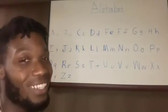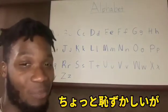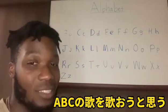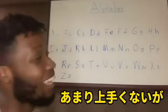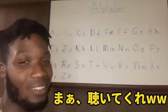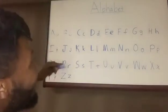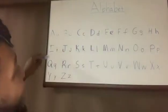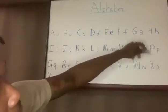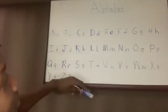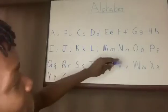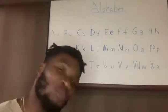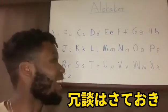This is about to be corny, but for those of y'all that maybe have kids, we got an ABC song. I don't got a good voice, but let's go: A, B, C, D, E, F, G, H, I, J, K, L, M, N, O, P, Q, R, S, T, U, V, W, X, Y, Z. Give me my Grammy — just kidding.